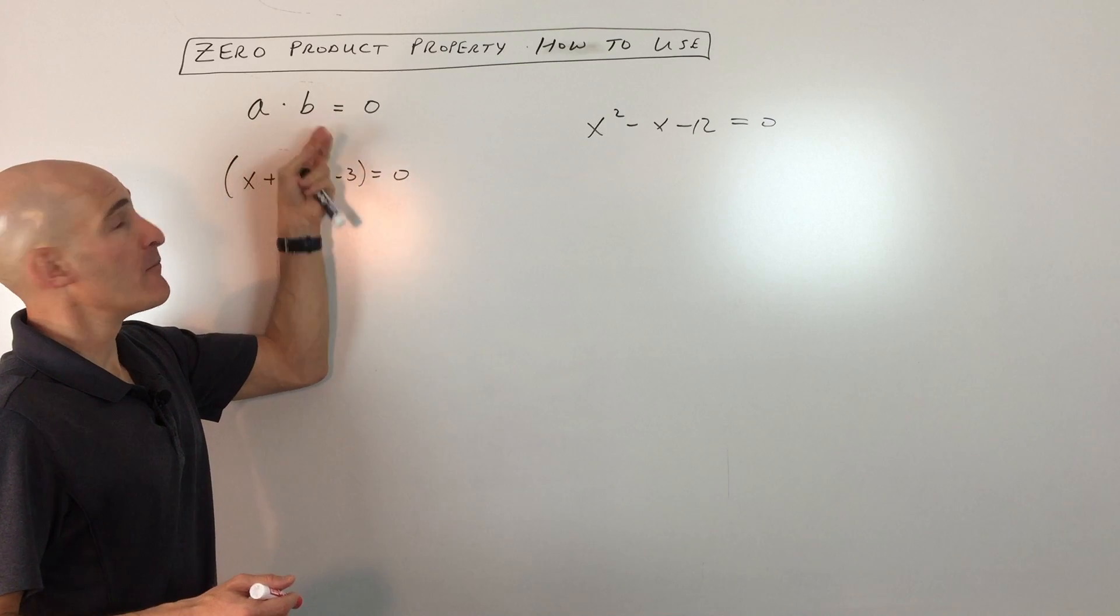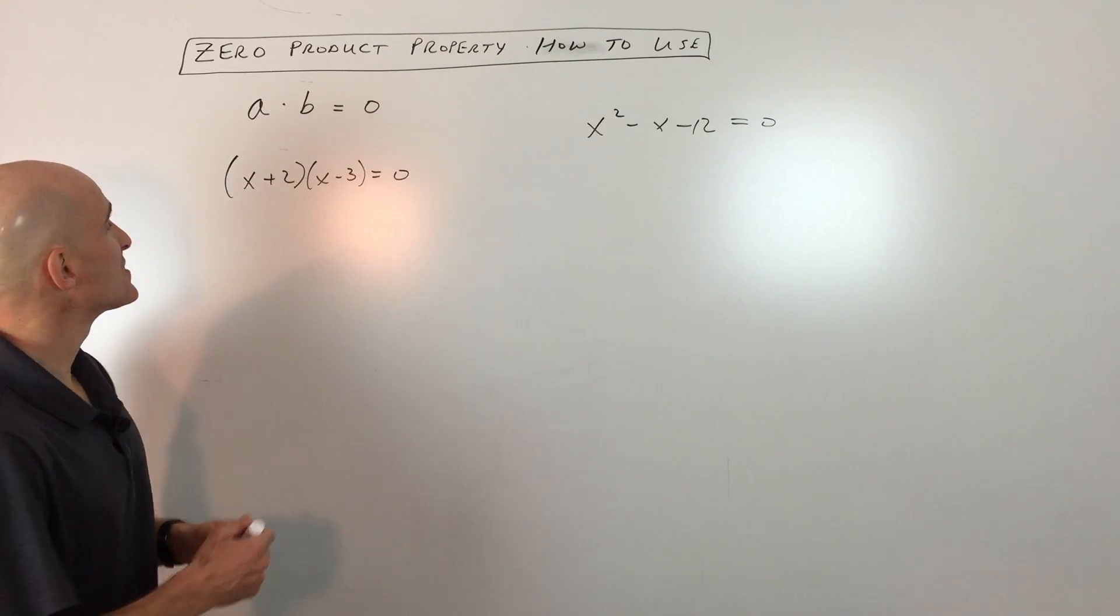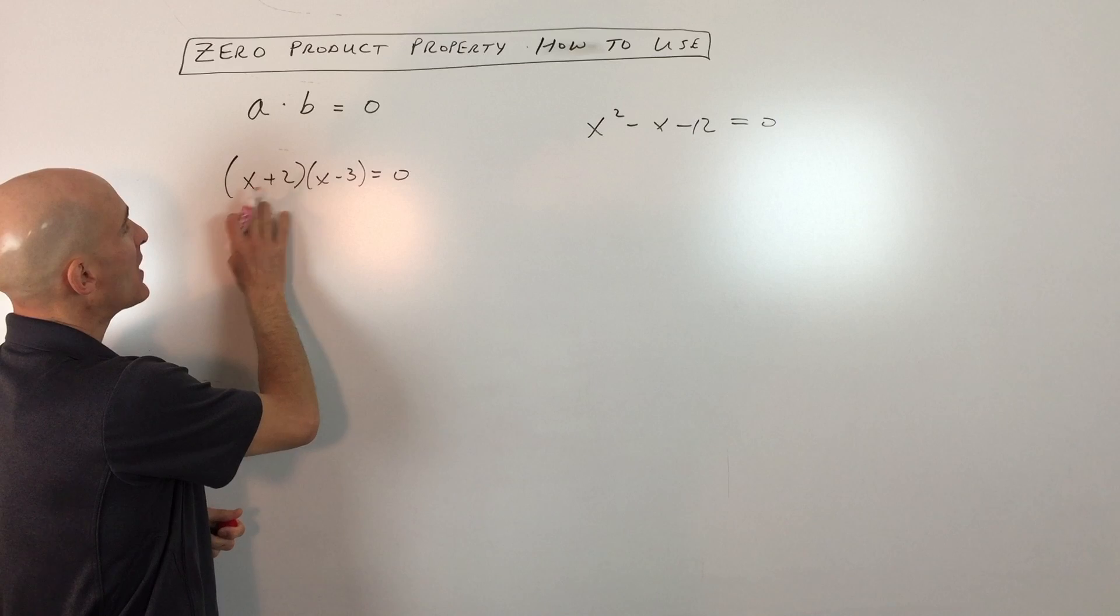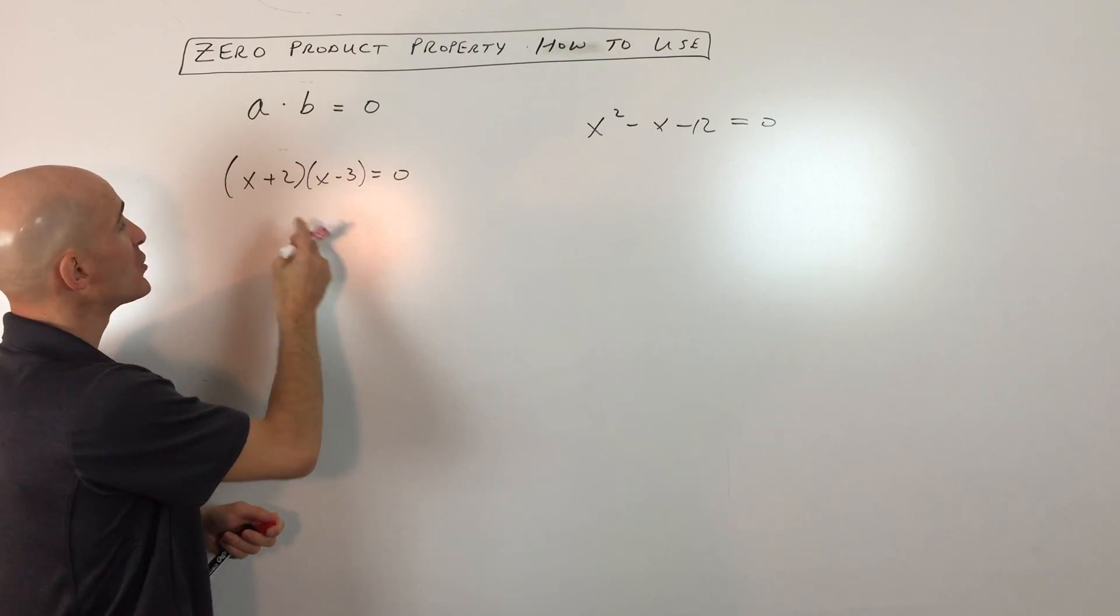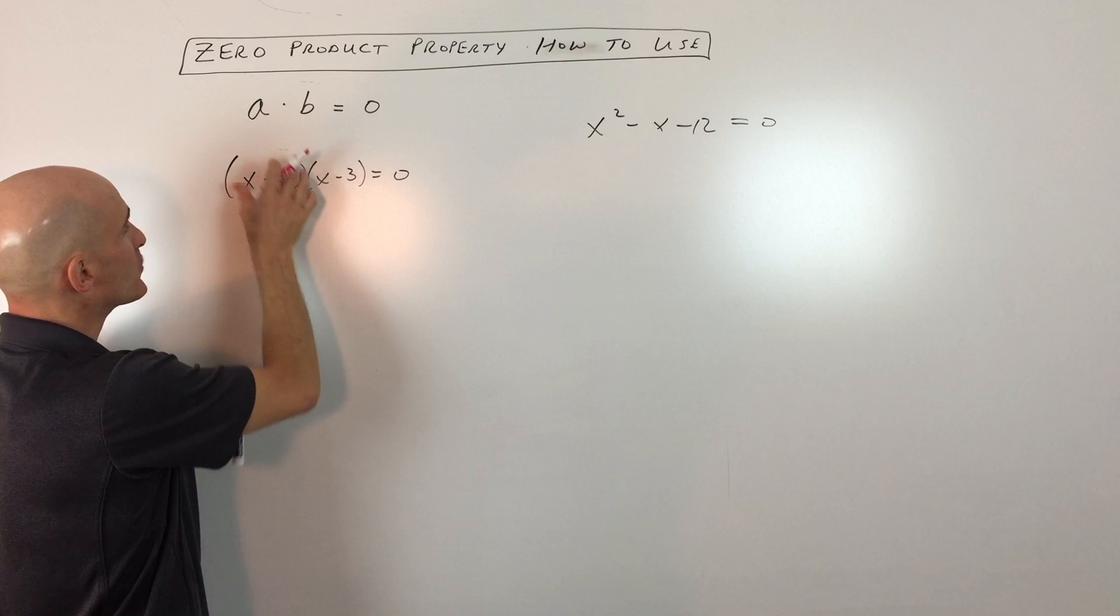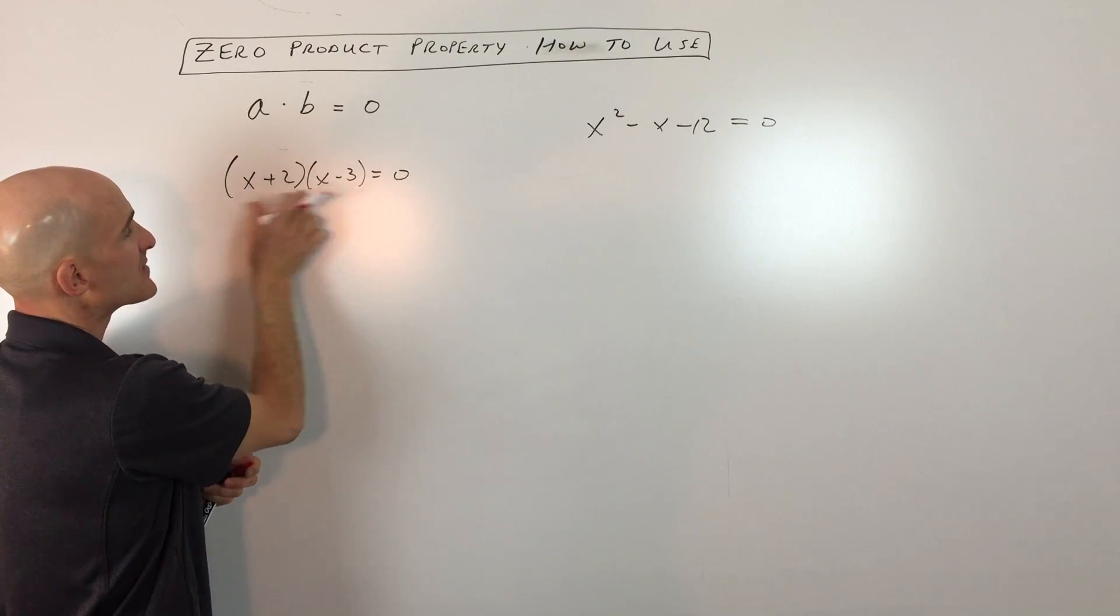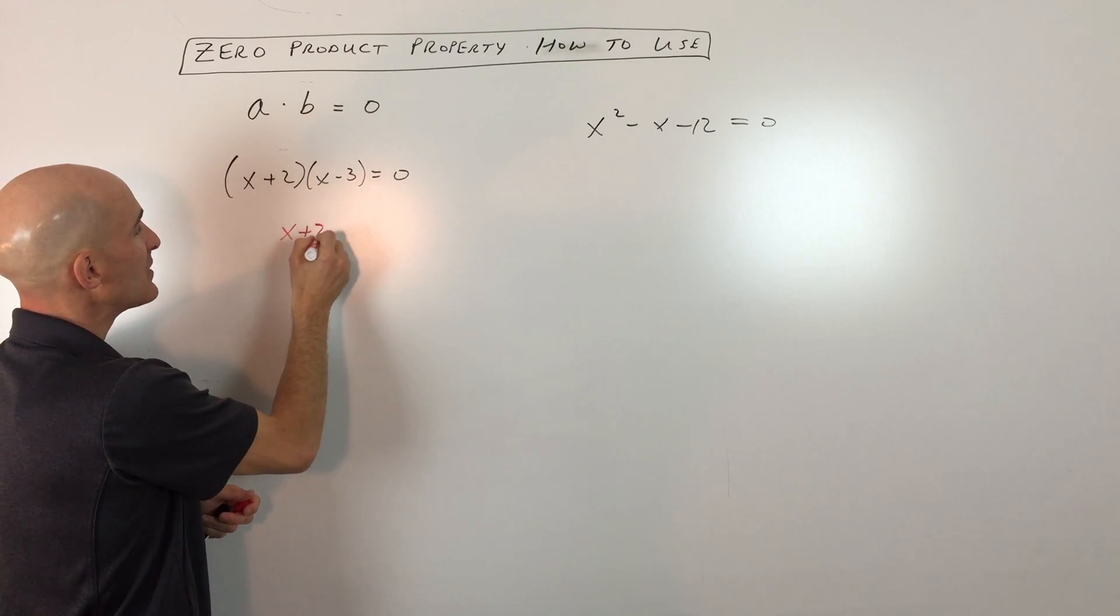So by working backwards, what we can do is if we know that this quantity is zero or this quantity is zero, we're going to take each group—because these groups are multiplied together, that's the product—and we're going to set each of them equal to zero.